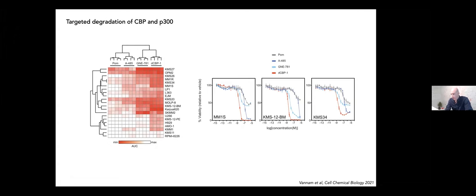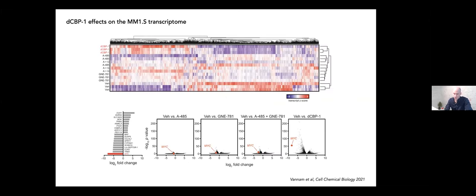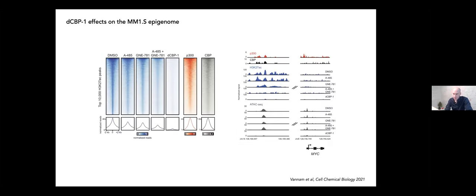In terms of cell viability, we see potent cell killing of a vast number of multiple myeloma cell lines that is more pronounced than inhibitors alone. The increase in cell killing activity is exemplified by an increase in Emax with treatment of this compound versus the inhibitors alone. At the transcriptional level, MYC is most potently down-regulated with the treatment of dCBP-1, more so than equimolar administration of both of the inhibitors of the CAT domain or the bromodomain.